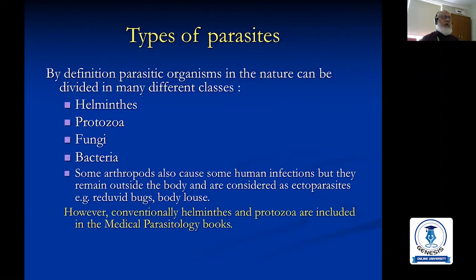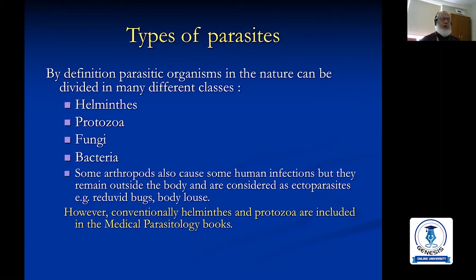Types of parasites: By definition, parasitic organisms in nature can be divided into many different classes, like helminths, protozoa, fungi, and bacteria. Some arthropods also cause human infections but remain outside the body and are considered ectoparasites — for example, reduviid bugs and body lice. Conventionally, helminths and protozoa are included in medical parasitology books.